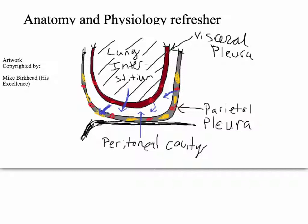This artwork comes from Mike Burkhead — thank you to him for providing it. This is the lung interstitium; we have the visceral pleura and the parietal pleura, with the potential space left open to show the movement of fluid. Specifically talking about normal physiology with serous fluid, you're going to have about 15 milliliters at any given time in this potential space.